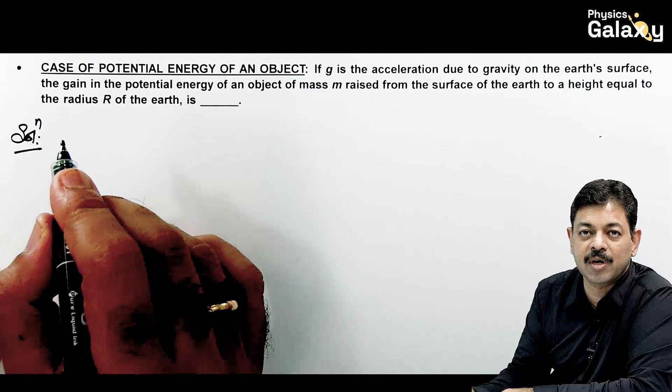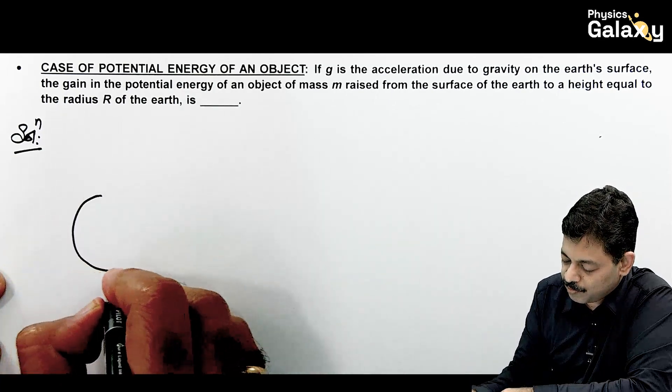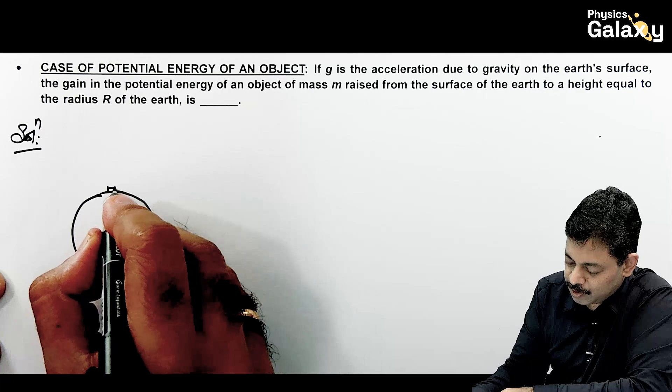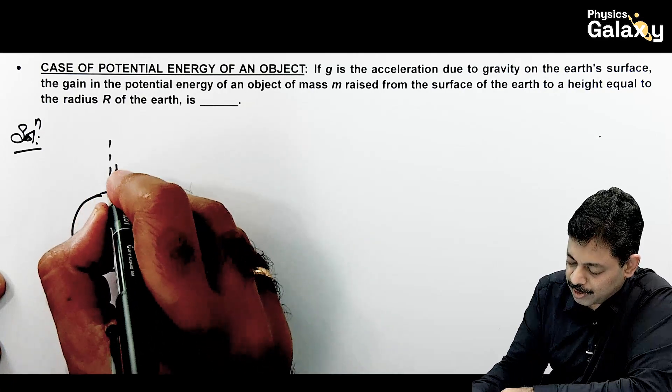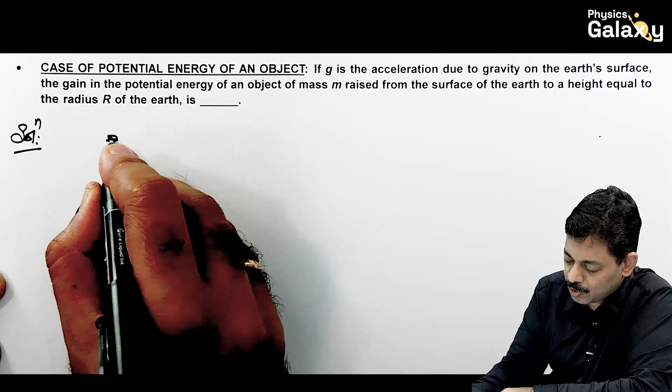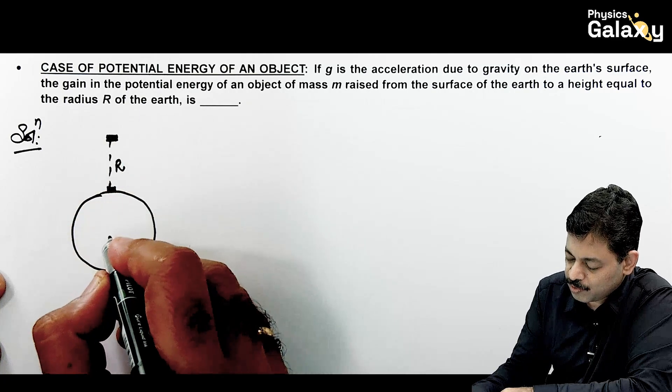But in this case, we ask different forms in question. If this is Earth's surface, it is raised by a height of Earth. So what will be the change in potential energy? That is what we need to see.